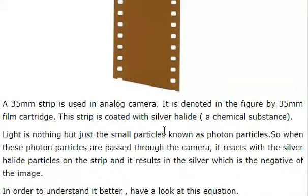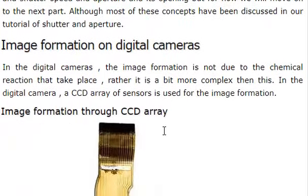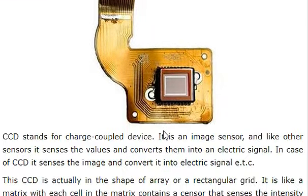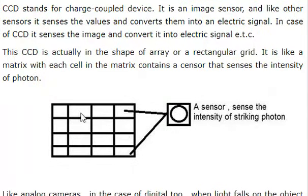The chemical substance is used for the image formation. This is a CCD array in this sensor. CCD means charged coupled device. This is the rectangle form because it is the array of form. In this rectangle form, we can use a sensor in the rectangle.